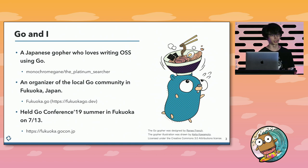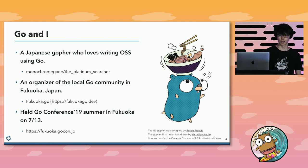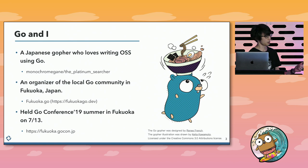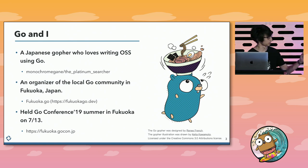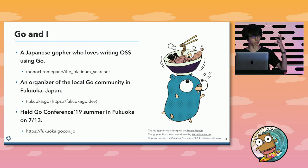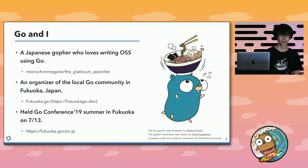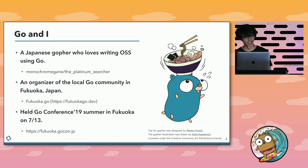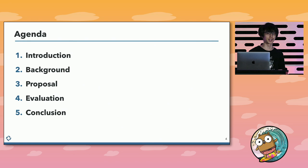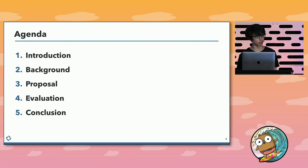200 gophers in Japan gathered and enjoyed 30 sessions. It was a lot of fun. This is our conference gopher — he has ramen, which is a famous Japanese food, on his head. He looks good, I think. Today, I am here to talk to you about the optimization for the number of goroutines.